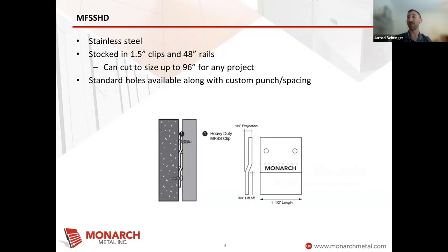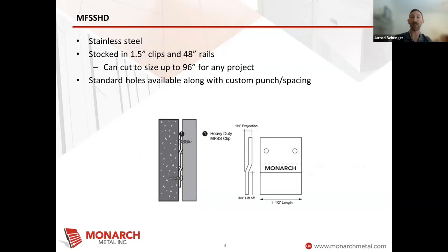Some brief overviews into Z-Clips that we see used on the exterior side — normally we see a Z-Clip used on the interior side. These can be used in a non-rain screen system. I like to show this to architects as an option where rain screens may not necessarily be needed — it may be on the first floor or a small panel that's just running on a small horizontal somewhere. This is a stainless steel clip that we stock in clips and rails, much like our other ones. We can cut this up to almost 96 inches, and we have the ability for almost all of our system offerings to do custom holes as well as custom lengths.